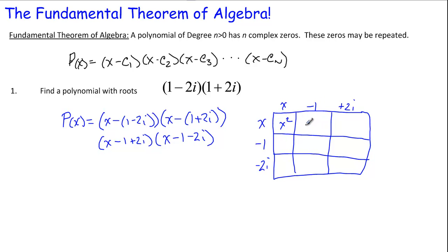Then x times that would be negative x. And then x times that would be positive 2ix. Then we do it with this row. So this means negative x, one, then negative 2i. Then we do it with this row. Negative 2ix. What is that? Negative 2, positive 2i. Then finally, negative 4i squared.